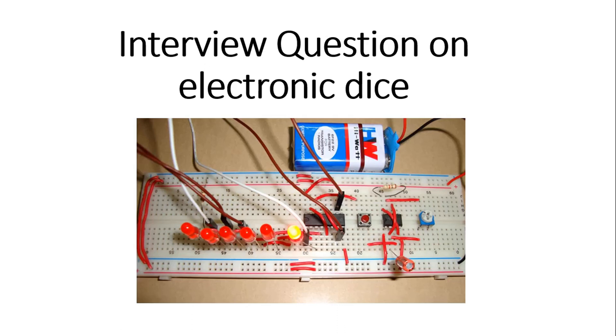Before asking you the actual interview question, let me tell you what I mean by an electronic dice. The electronic dice shown in the figure uses six LEDs to represent six numbers on the actual dice. For example, LED 1 represents number one on the dice, LED 2 represents number two, LED 3 represents number three.